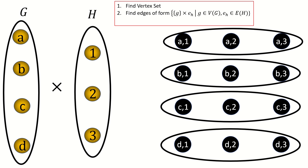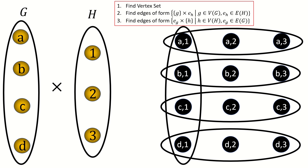Notice that these edges form the copies of our second factor hypergraph in the product. Next, let's find the edges of the second type — those inherited from the left factor. Let's fix our right coordinate to be 1. What edges are present in the left factor? There's only one: A, B, C, D. So A1, B1, C1, D1 is an edge in our product. And as we fix our right coordinates to be 2 and then 3, we can also produce only one edge each time, giving us the following edges in our product.